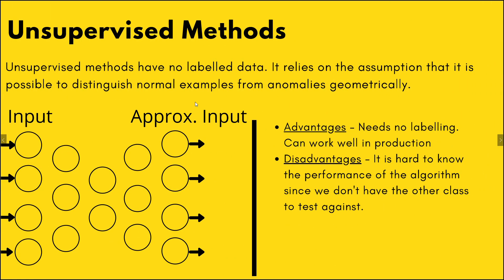Unsupervised methods have no labeled data whatsoever. They rely on the assumption that it is possible to cluster the normal ones and keep the anomalous ones separate — kind of geometrically interpreting them. The advantage is that no labels are needed, so training becomes really fast and easy. The disadvantage is that you can't measure model performance because there are no definite metrics like accuracy to measure against.